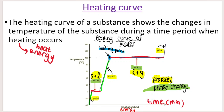Looking more closely at the heating curve — the heading is 'heating curve of water,' showing the substance water in particular. Another heading could be 'temperature of water versus time in minutes.' On the y-axis we've got temperature measured in degrees Celsius. It's very important when drawing a graph to label your axes correctly with units: temperature in degrees Celsius, time in minutes. I've labeled the curve and shown in yellow the phases present: solid, then solid and liquid, then liquid, then liquid and gas, and then gas.